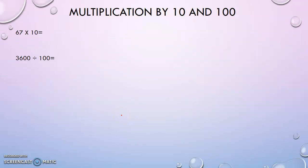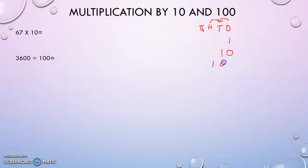Now we are going to look at multiplication by ten, hundred, and thousand. This is easily explained with the help of the place value system. Looking at place values — ones, tens, hundreds, thousands — one into ten gives us ten, ten into ten gives us hundred, hundred into ten gives us thousand. So multiplication by ten is equal to shifting the digit by one place to the left.